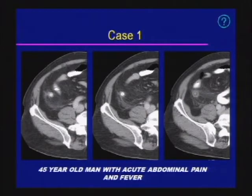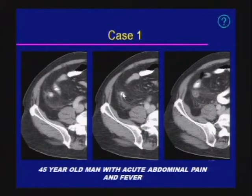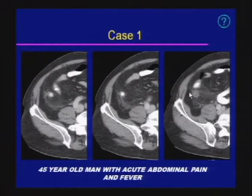Case one: a 45-year-old man with acute abdominal pain and fever. We see a large amount of stranding within the right lower quadrant. There's a high-density structure within the lumen of the appendix consistent with an appendicolith. We note stratification of the wall of the appendix with stranding. There's no significant free fluid in the pelvis and no evidence of abscess, so this is likely uncomplicated appendicitis.